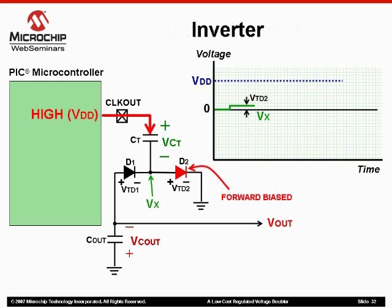This could be used to create a voltage output that is a negative approximation of our clock out amplitude. How it works is fairly straightforward. On the high transition of the clock period, the transfer capacitor will charge. This will leave a positive voltage at the node between our two diodes that I have labeled on the diagram Vx, equal to the threshold voltage of the D2 diode.